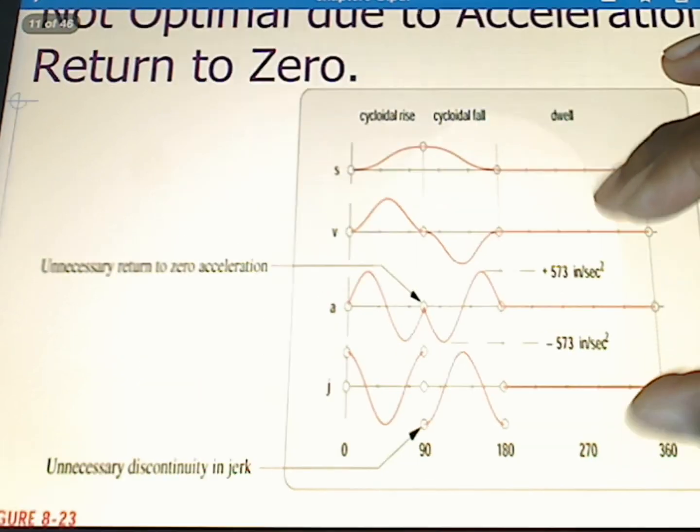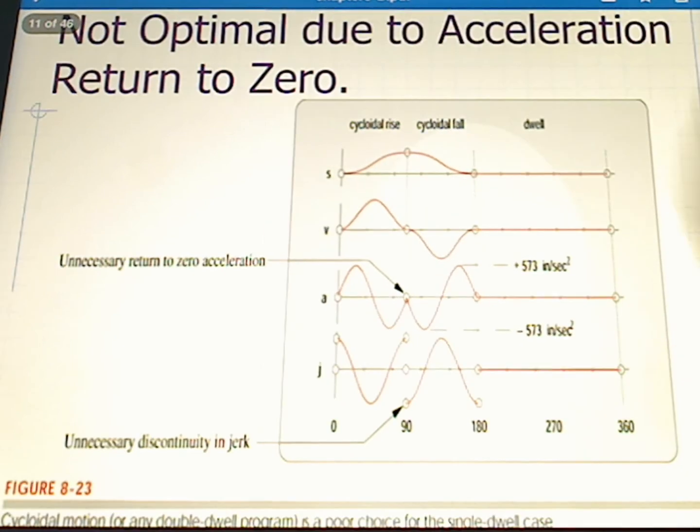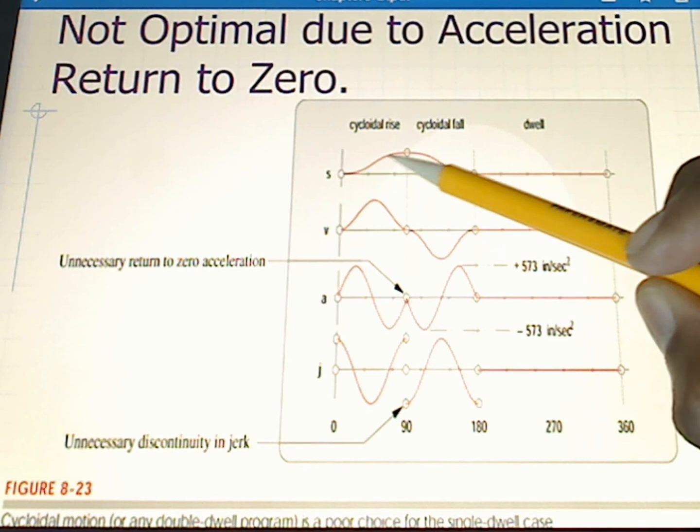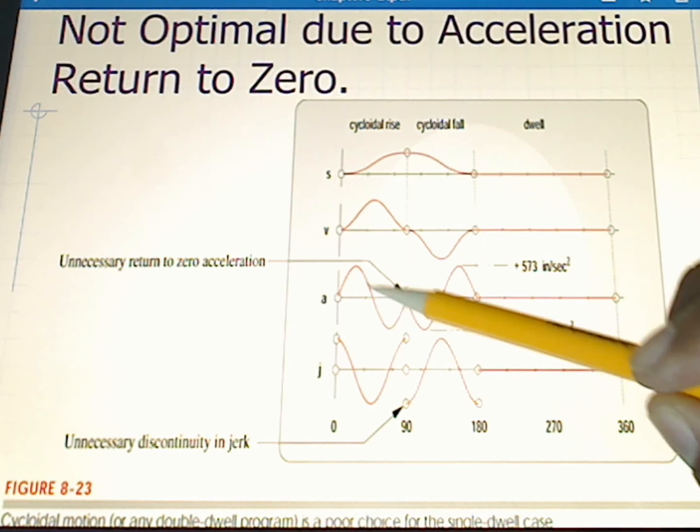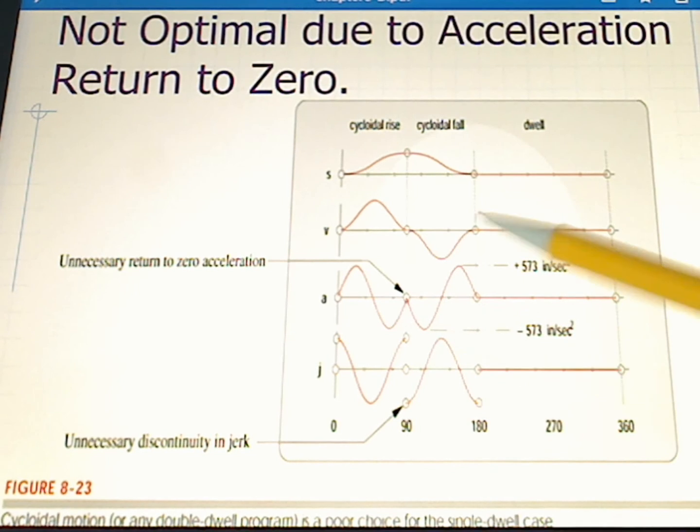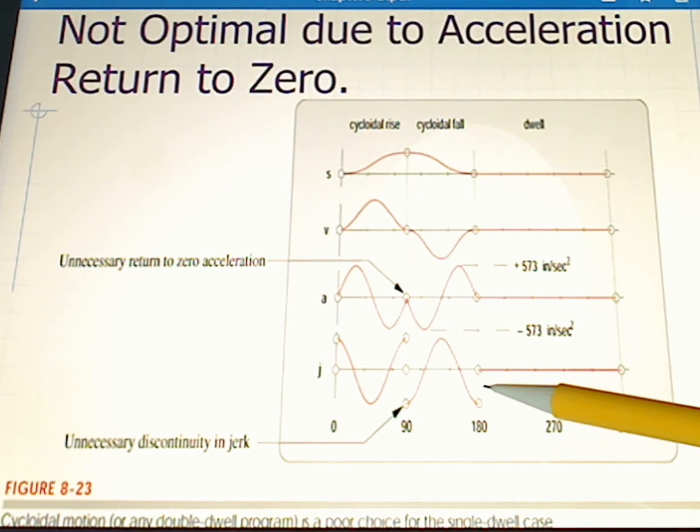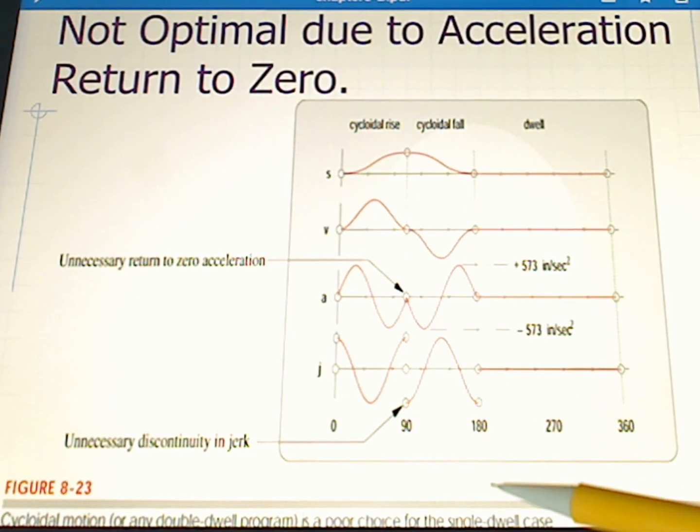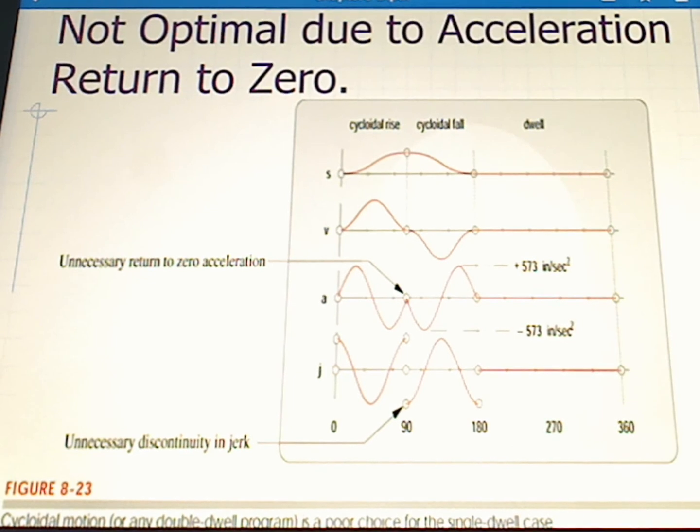So why did this occur? Well, mainly this occurred because of the nature of the SCCA family. They're really built or designed for double dwell applications. On a double dwell, after this rise there would be a dwell here, in which case the acceleration would want to come to zero. However, in this case for a single dwell application, it's not a good idea to use one of the curves from the SCCA family.